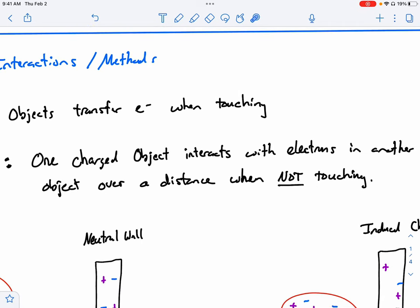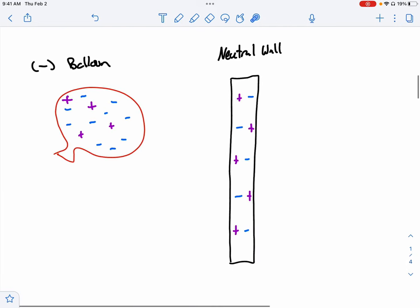An object can become charged when it interacts with electrons in another object over a distance, even though it's not touching. So what does that mean? Well, let's say I have a balloon, and that balloon has a negative charge. Therefore, there's more negatives than positives. Overall, it's negative. And it's going to approach a neutral wall.